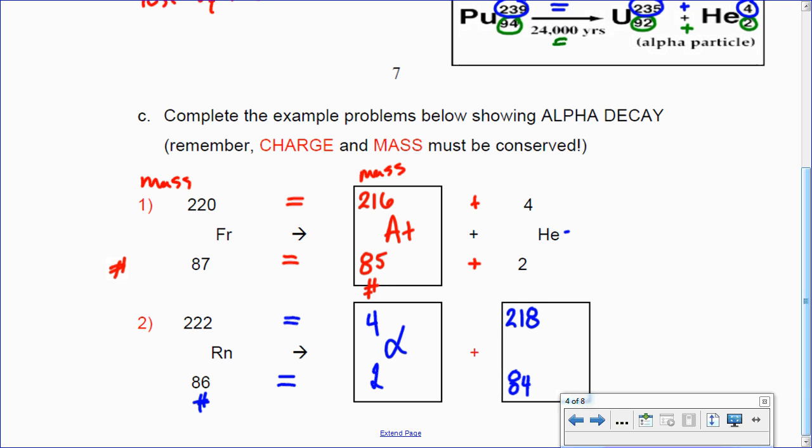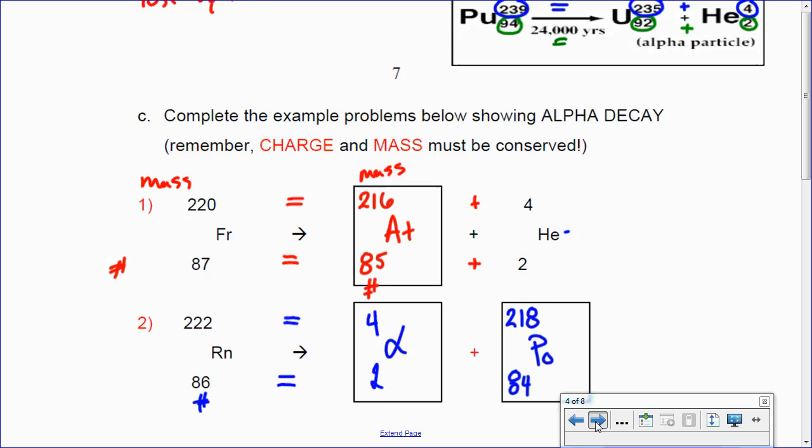Now, you could use the He symbol like it is here if you wanted to. But I like to use the alpha symbol. So, now that I know I've got alpha decay because that's the prompt here, I have to figure out 4 plus something is equal to 222. Well, that's not so tough. 218 plus 4 equals 222. And then 86 for the atomic number here has got to equal 2 plus something. Well, it's not so tough either. That's got to be an 84. So, now all I have to do is look up the symbol, atomic number 84, P, oh, polonium, polonium. Okay. So, those are some basic alpha decays.